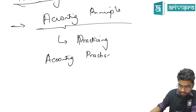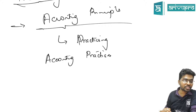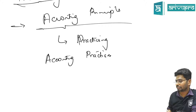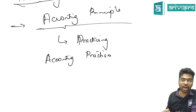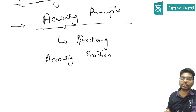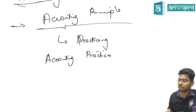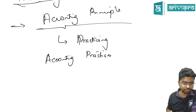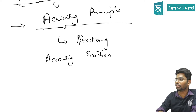Write down the definition: accounting conventions emerge out of accounting practices — in brackets, accounting principles — adopted by various enterprises over a period of time.